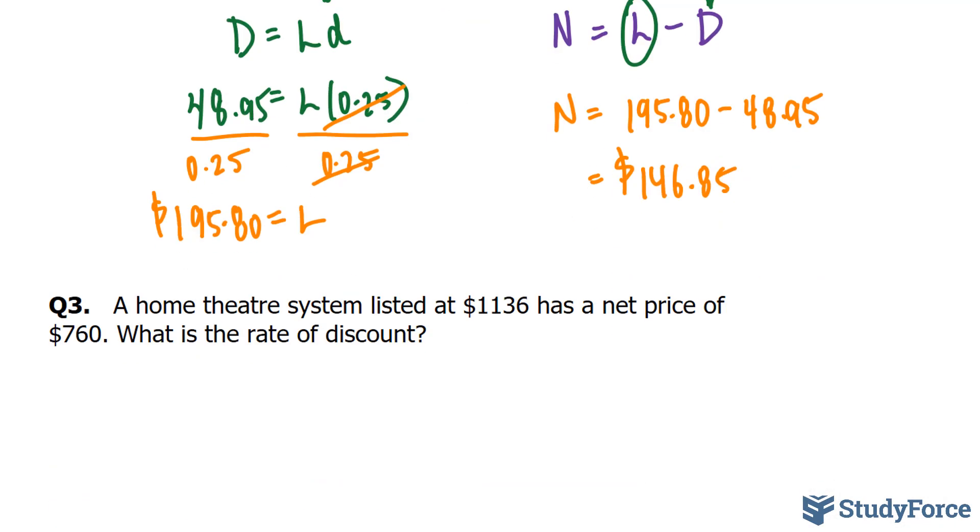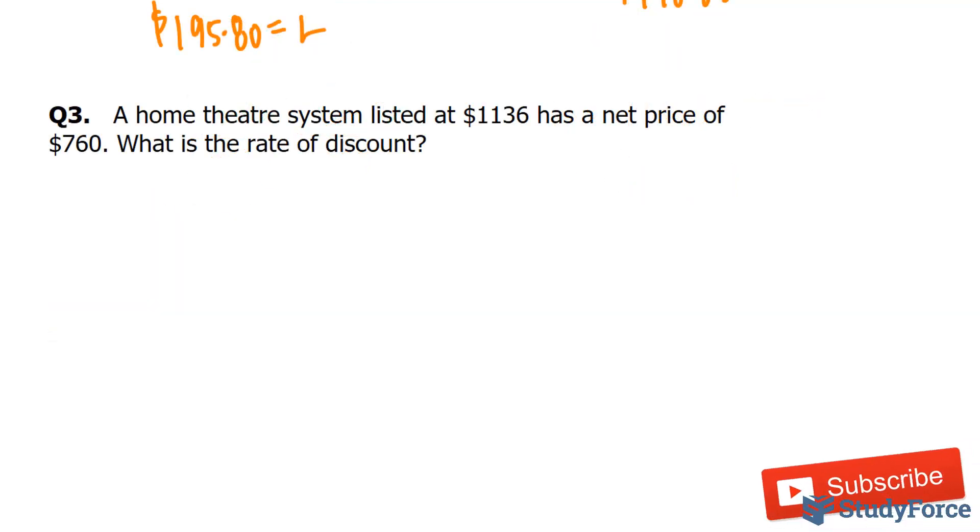And finally, for our last question, a home theater system listed at $1,136 has a net price of $760. What is the rate of discount? Now, this question is no different than a percent change problem. And, in one of my previous lessons, I've taught that percent change problems can be solved using the formula I plus minus I, R is equal to F.